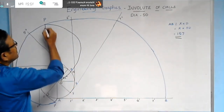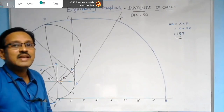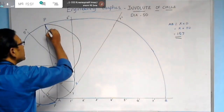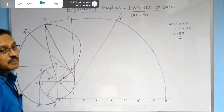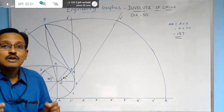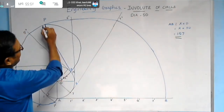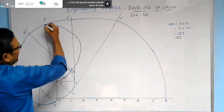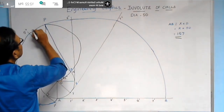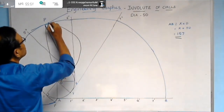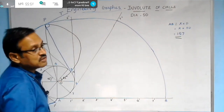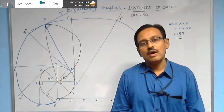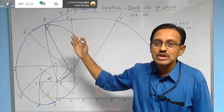Join N to P — the line PN is the normal to the involute curve. Then draw a line perpendicular to PN passing through P; this line is called the tangent to the involute curve. This completes the construction of an involute of a circle of diameter 50mm along with its tangent and normal.